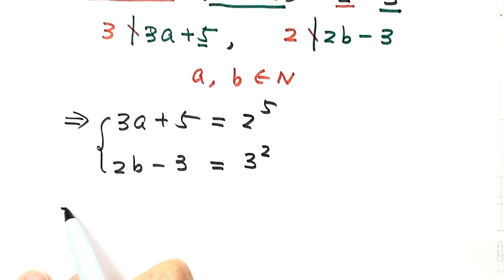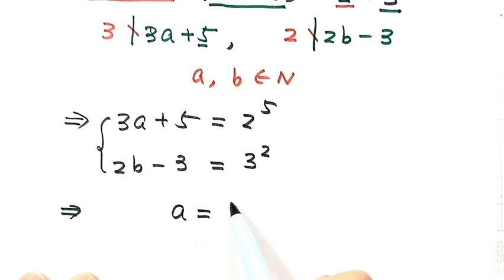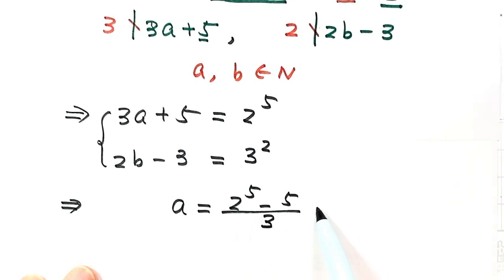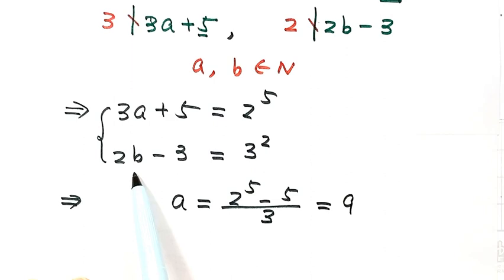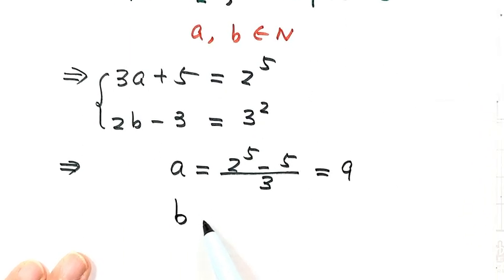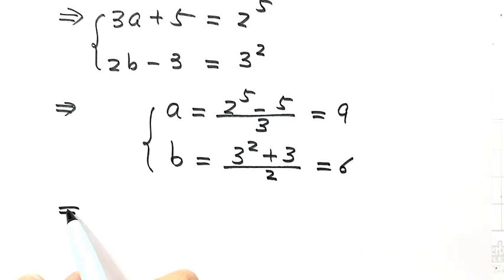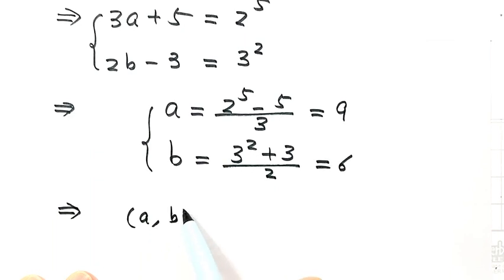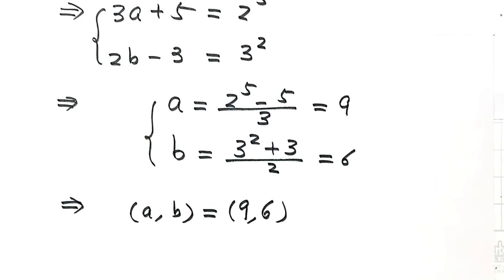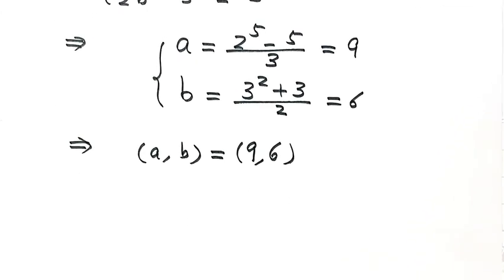So we have 3a plus 5 equals 2 to the power of 5, which gives a equals (32 minus 5) divided by 3, so a equals 9. And 2b minus 3 equals 3 squared, which gives b equals (9 plus 3) divided by 2, so b equals 6. Therefore the solution of the equation is a equals 9 and b equals 6.